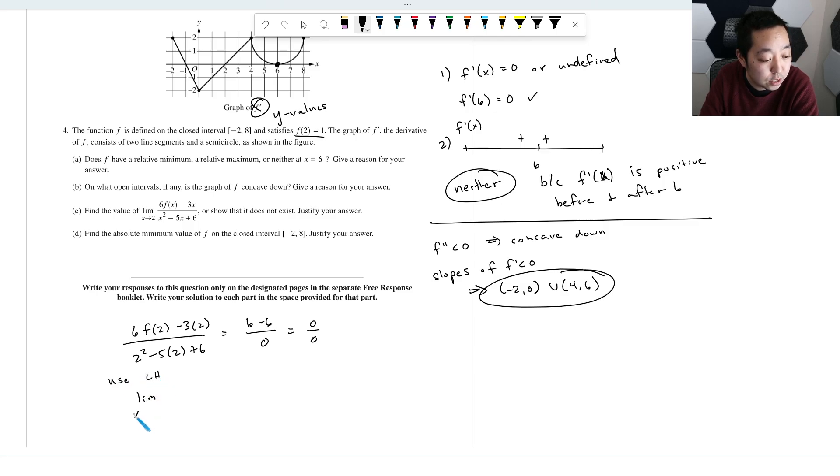So we're going to use L'Hopital's rule. So then we're going to say the limit as x approaches 2, we're going to take the derivative of the top, which is going to be 6 times f prime of x, derivative of minus 3x is minus 3. Then the derivative of this is going to be 2x minus 5. And now we're going to plug in, so we're going to get 6 times f prime at 2 minus 3 over 2 times 2 minus 3. So that's going to equal, what's f prime at 2? f prime at 2 is the y value here, because this is a graph of f prime. So I want to look for the y value right there. That's 0 over 4 minus 3, which is 1. So this is gonna be negative 3.